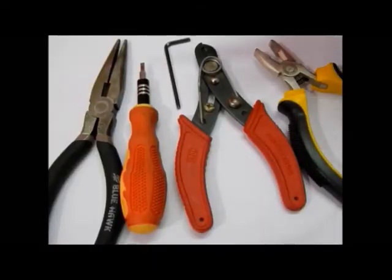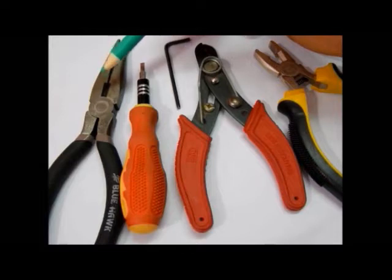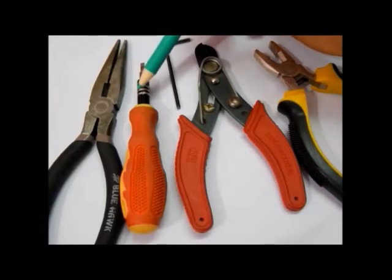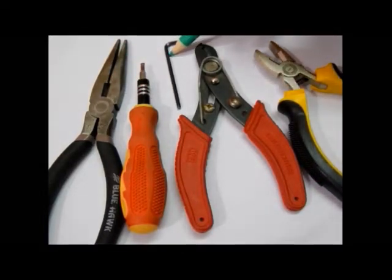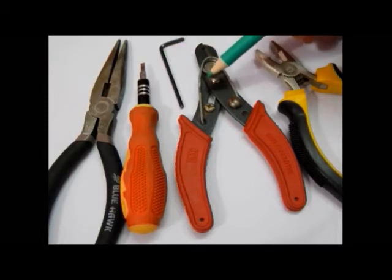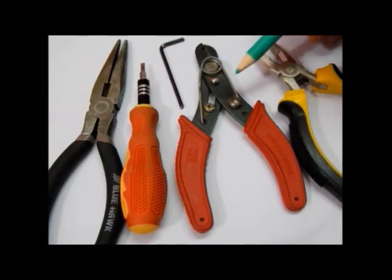These are the tools required to install the hotend onto the printer: a plier to hold the hotend, screwdriver to connect wires to RAMPS, hex key to fit hotend to extruder assembly, wire stripper, and a small plier.